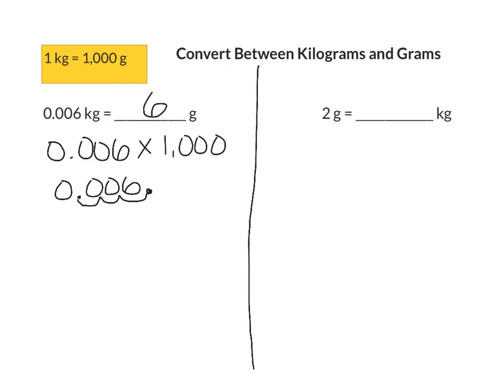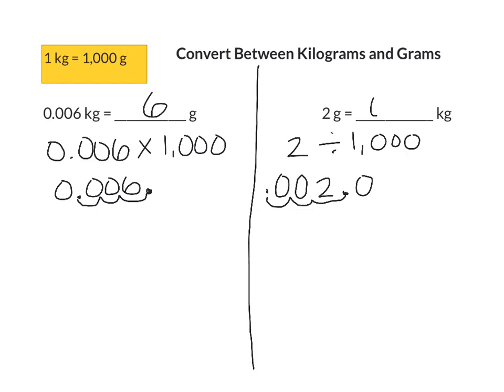Now we're going to go the opposite, from grams to kilograms. Hopefully you're starting to understand the pattern — instead of multiplying by 1,000, you're going to be dividing by 1,000 when going from a smaller unit to a larger unit. We move our decimal point three places to the left and add in zeros to the places we created. Our final answer is equal to two thousandths kilograms.